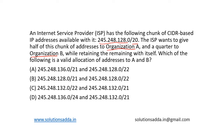Since we have slash 20, it means that from 32 bits, 20 bits are already allocated. We have the remaining 12 bits. So 2 to the power 12 gives us 4096 addresses available.